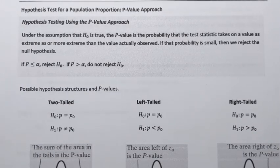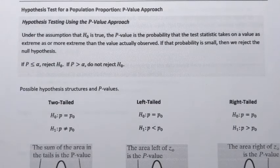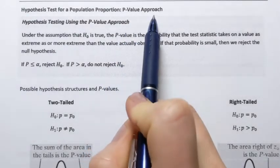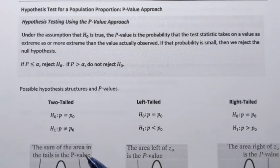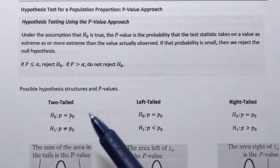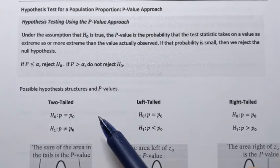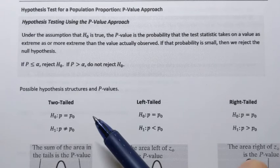In this video we're going to learn how to perform hypothesis testing for a population proportion. The method that we're going to use is called the p-value approach. I'm going to briefly explain the idea of the p-value approach, but it will make more sense once we do an example.